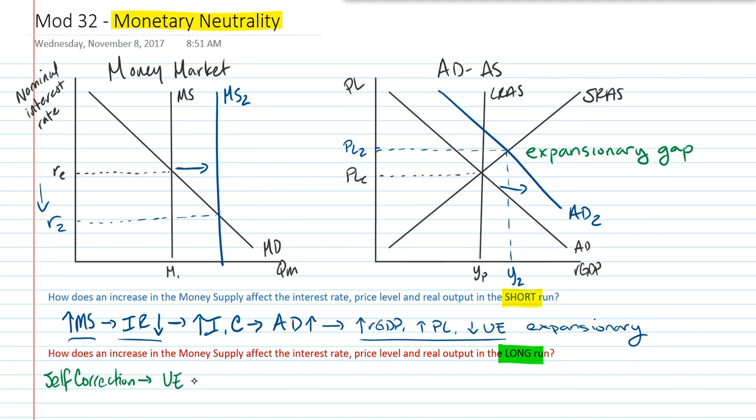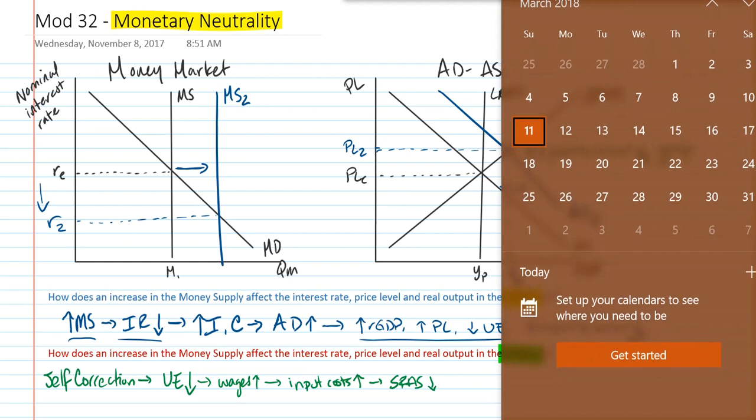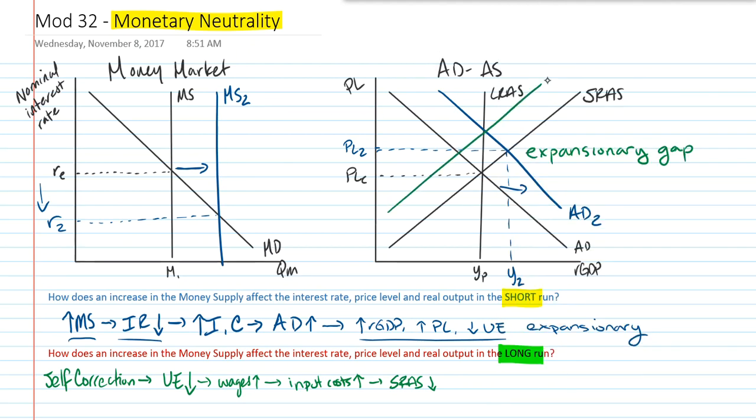Self-correction says that, in particular, the low rate of unemployment is going to lead to an increase in wages over time. As we enter the long run, employees, seeing the shortage of workers available in the market, are able to negotiate higher wages from their bosses. The increase in wages represents an increase in input costs for suppliers, and our supply curve, our SRAS, will then decrease. So we move our supply curve over to the left to get us back into this long run equilibrium.